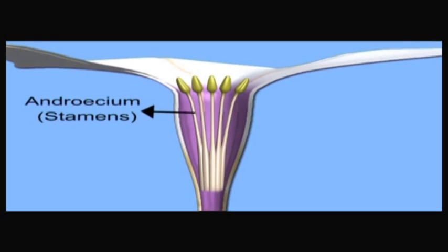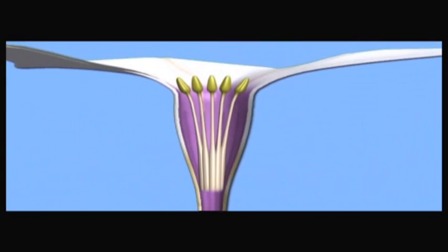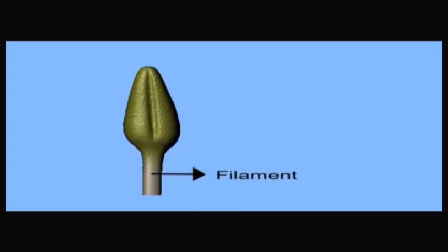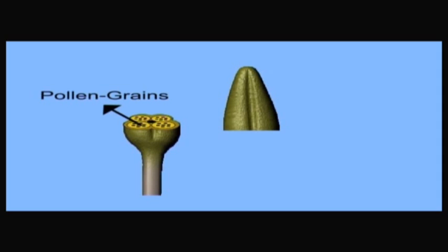Androecium — the long thin structures present inside the corolla are called stamens. The stamens are five in number and united with the petals up to a certain length. In some flowers, stamens are free and not united with petals. Stamens are the male reproductive parts of the flower and are collectively known as androecium. A single stamen has a stalk called the filament and an expanded part at its tip called the anther. When the anthers are ripe, they produce fine dust-like particles called pollen or pollen grains. The pollen grains are male gametes which help in fertilization.